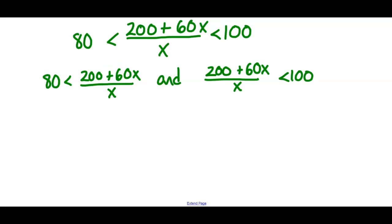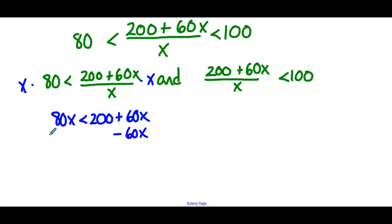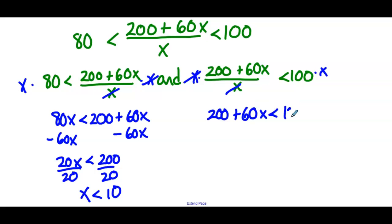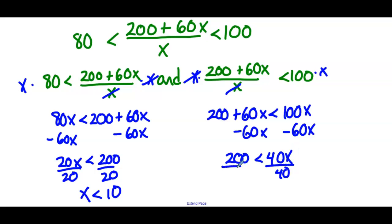Starting with the first inequality, multiply x on both sides: 80x is less than 200 plus 60x. Subtract 60x from both sides — 20x is less than 200. Divide both sides by 20 — x is less than 10. For the second inequality, multiply x on both sides: 200 plus 60x is less than 100x. Subtract 60x from both sides — 200 is less than 40x. Divide both sides by 40 — 5 is less than x.